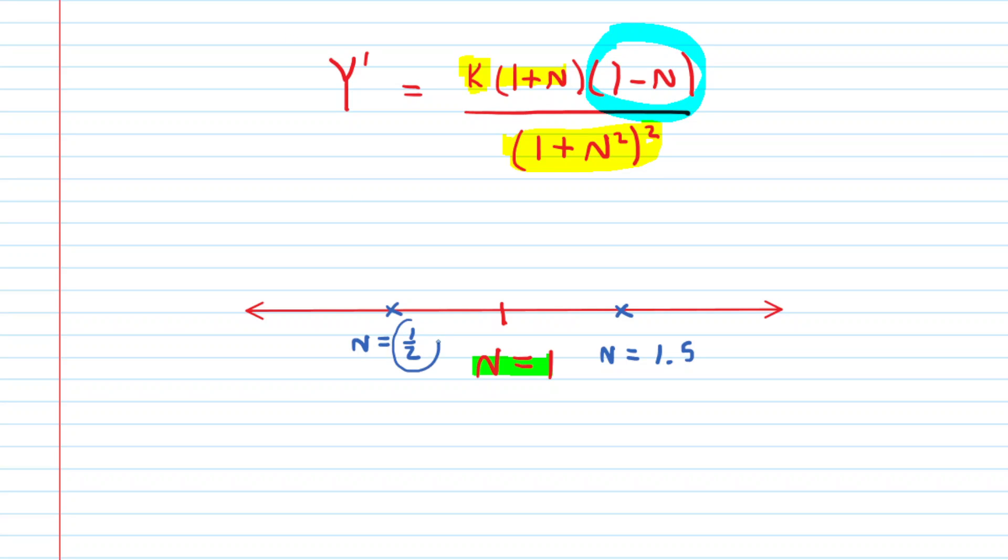If we plug in our first test value of 1/2, we would have 1 minus 1/2. That would give us a positive outcome. The derivative is positive in this interval, meaning the yield function is going up. If we plugged in 1.5, we would have 1 minus 1.5. That would be negative. The derivative is negative in this sub-interval, meaning the yield function is decreasing. We have a maximum at N equals 1. According to the first derivative test, Y is maximized when N equals 1.